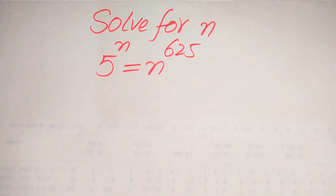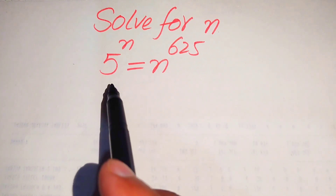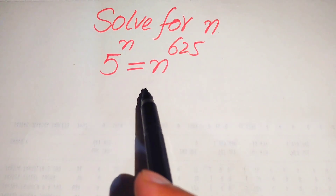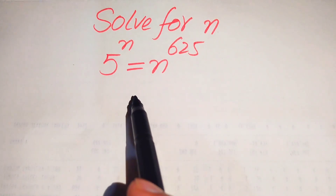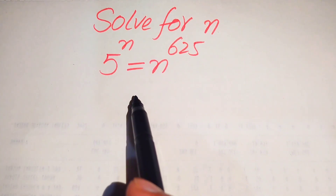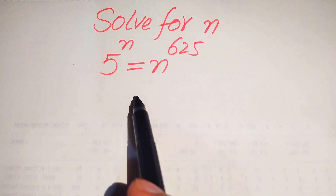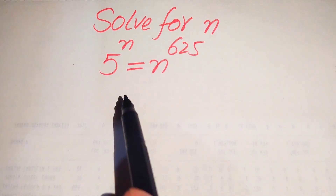Hello everyone. How to solve this problem for the values of n if we have 5 to the power of n is equal to n to the power of 625. We solve this problem for the values of n. Here we need to find all the roots of this equation, and at the end we will verify which of the roots are solutions and which are extraneous roots.